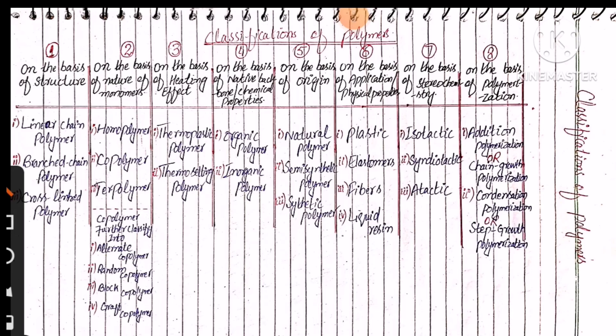Assalamu alaikum students. We are studying a course on organic polymers. Today our topic is classifications of polymers. We can classify polymers mainly into eight classes. The first one is on the basis of structures. On the basis of structures, polymers can be classified into three subclasses: first is the linear chain polymer, second is the branched chain polymer, and third is the cross-linked polymer.